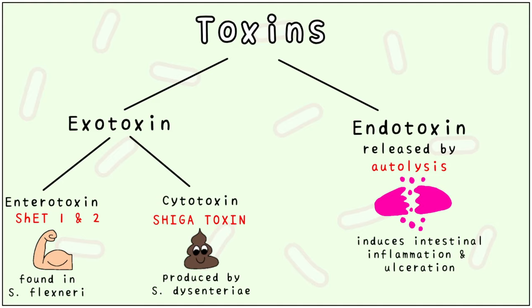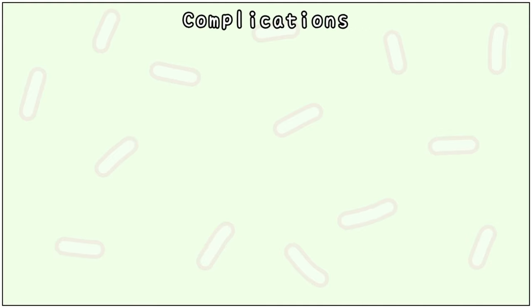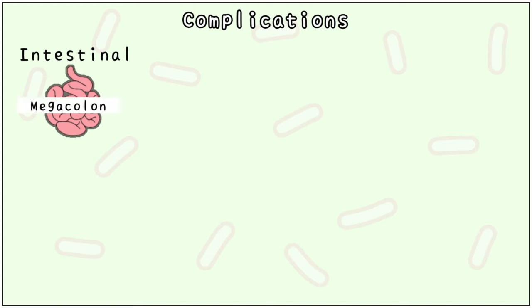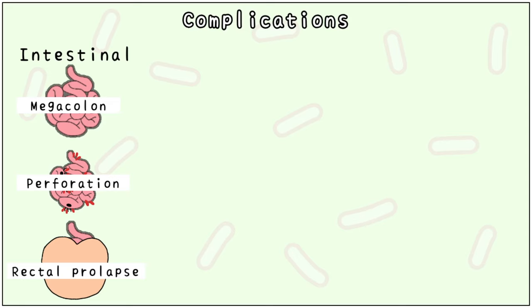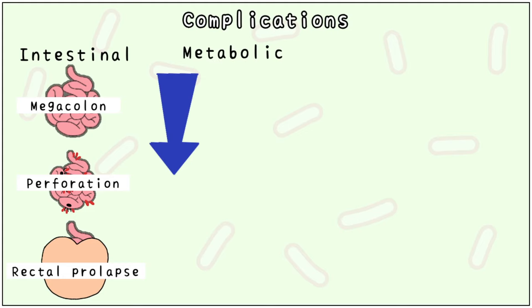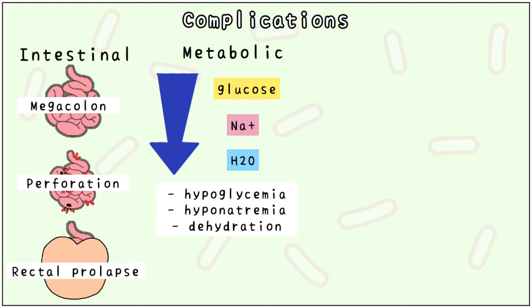Infection by Shigella could cause some complications: megacolon, which means an increase in the size of the large intestine; perforation and ulceration of the intestinal walls; and protrusion of the intestine from the anus, which is called rectal prolapse. Metabolic complications of Shigella are lowering of body levels of glucose, sodium, and water, called hypoglycemia, hyponatremia, and dehydration respectively.